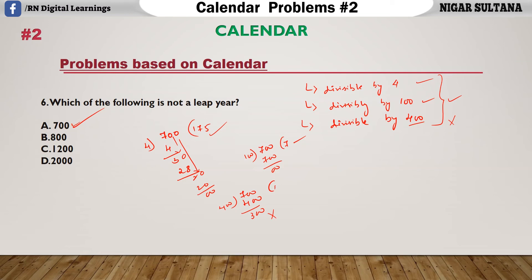Now, let us verify all these other options. 800 is divisible by 4? Yes. Whether 800 is divisible by 100? Yes. It is divisible by 400 also. Then, it is a leap year. Similarly, 1,200 is divisible by 4, 100, and 400 also, so this is also a leap year. 2,000 is also a leap year because this 2,000 is divisible by 4 as well as 100 then 400. Then, the answer for this is 700 which is not a leap year.